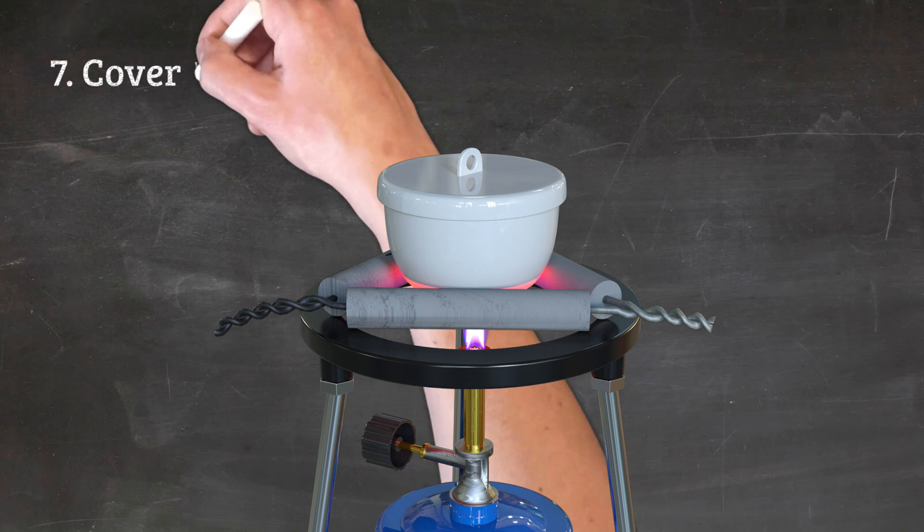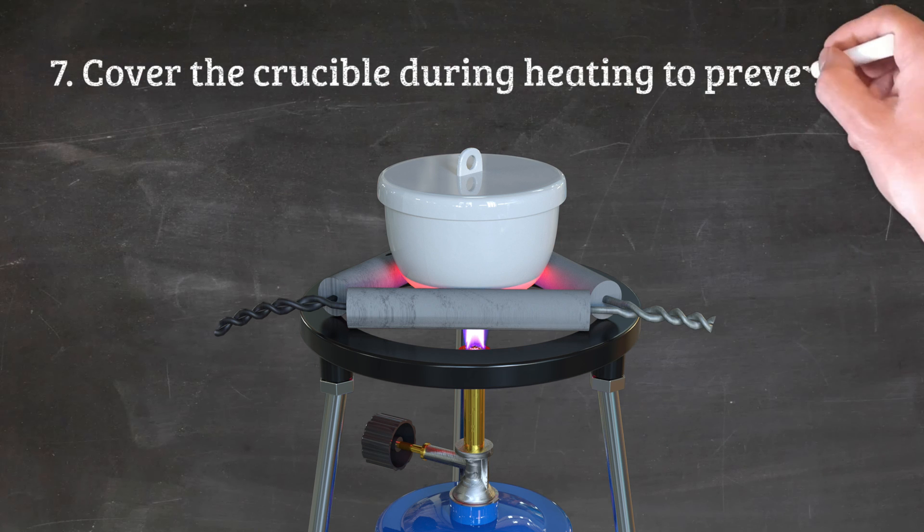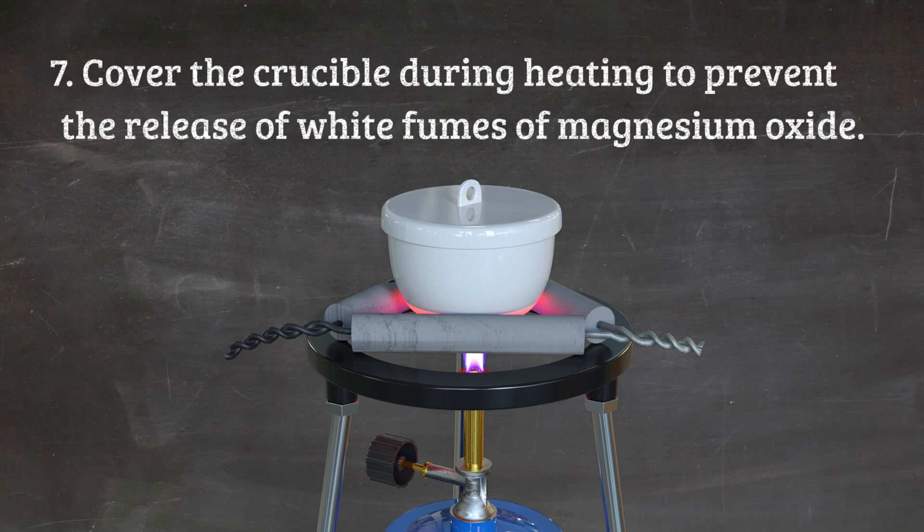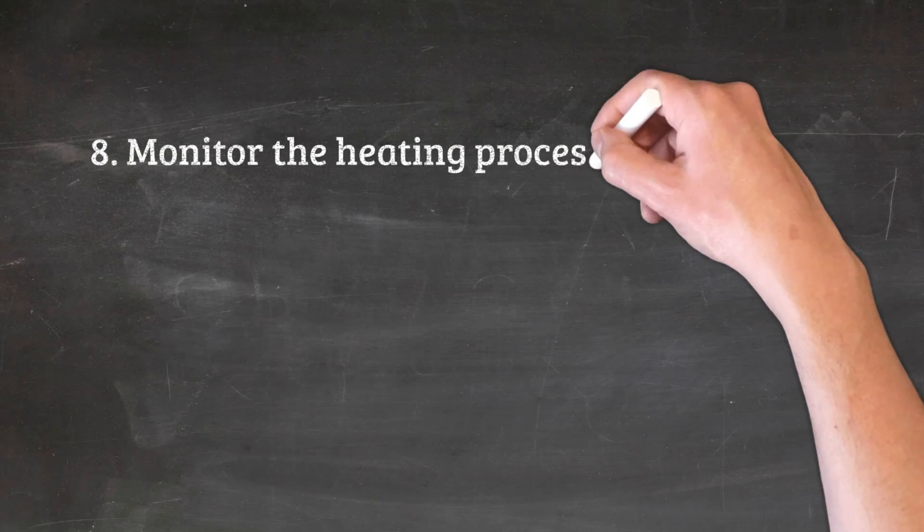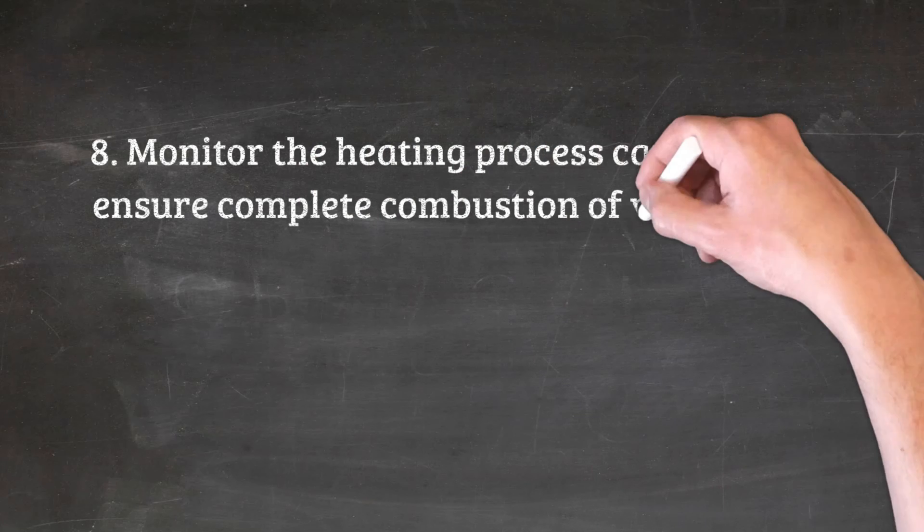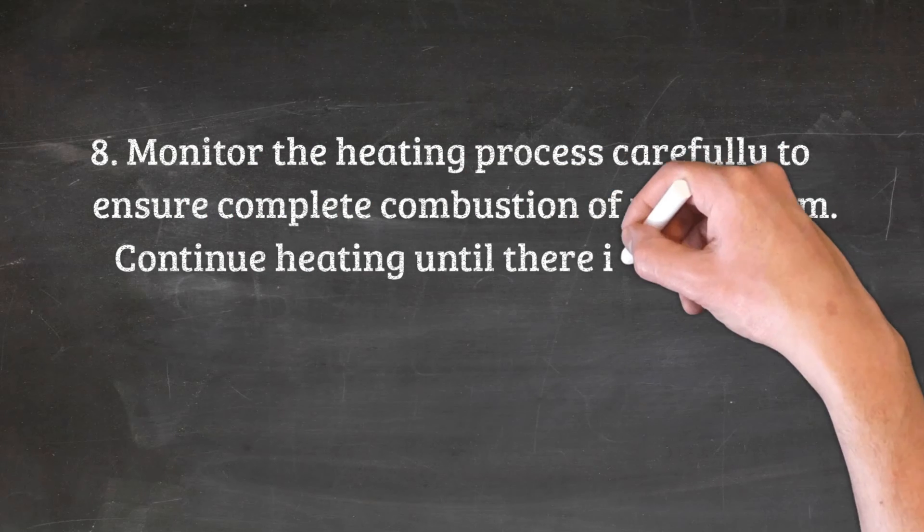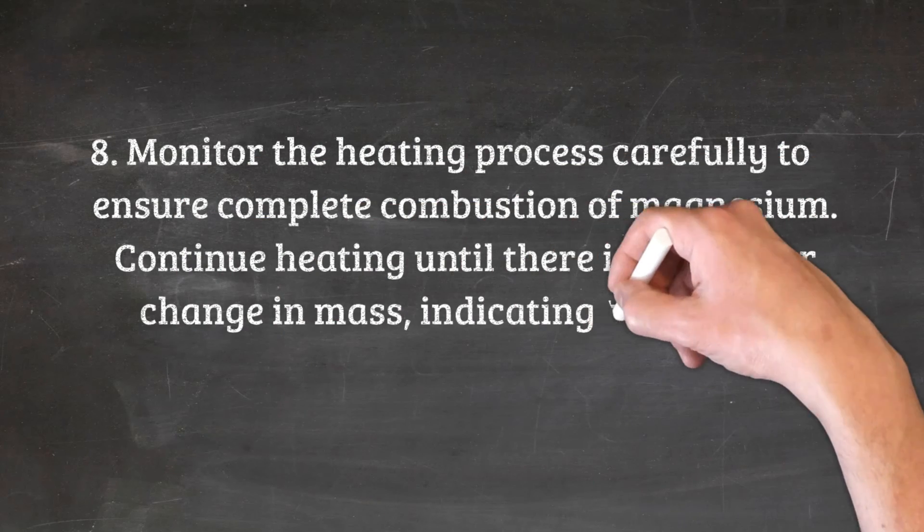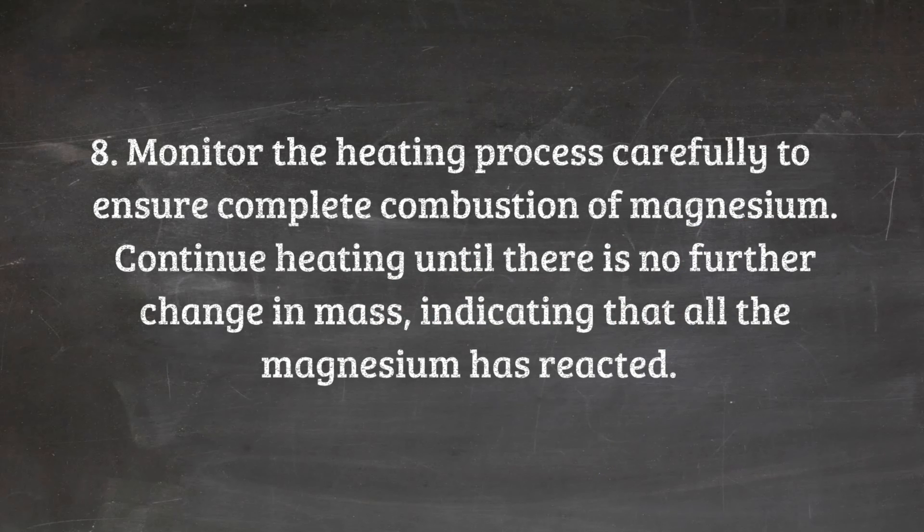7. Cover the crucible during heating to prevent the release of white fumes of magnesium oxide. 8. Monitor the heating process carefully to ensure complete combustion of magnesium. Continue heating until there is no further change in mass, indicating that all the magnesium has reacted.